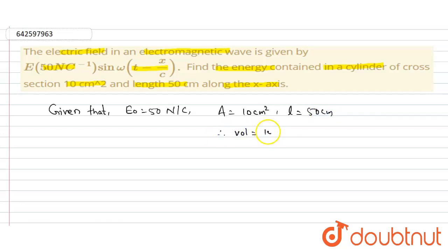Therefore, volume = 10 × 50 = 5 × 10⁻⁴ m³.